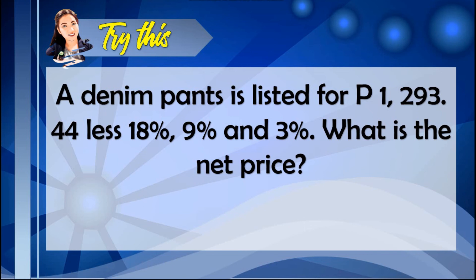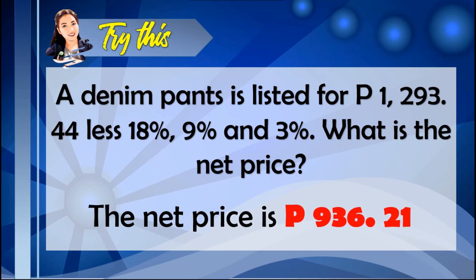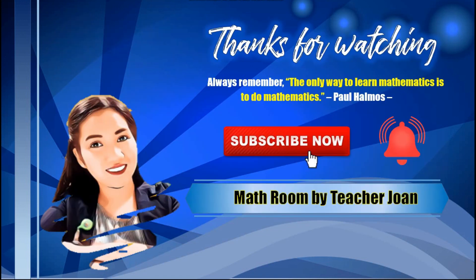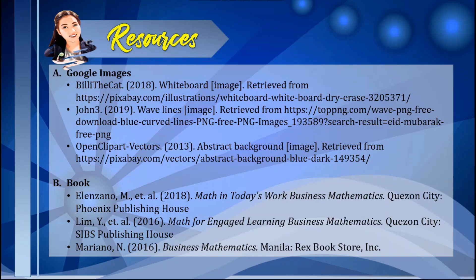Now, kindly try this practice item. You may pause the video to answer. The net price answer is 936.21. Here are the key takeaways: a discount series is a discount with two or more discounts based on a combination of conditions, and to solve for the net price, multiply the list price by all complement rates successively. Thanks for watching — see you on the next video!